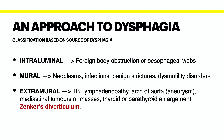Patients can also present with esophageal webs associated with iron deficiency anemia and atrophic glossitis in something called Plummer-Vinson syndrome.